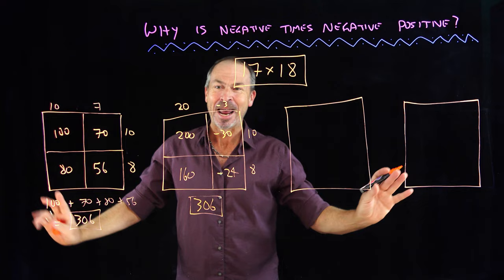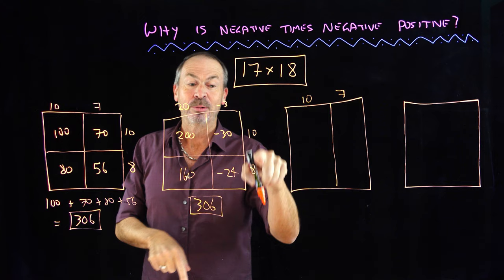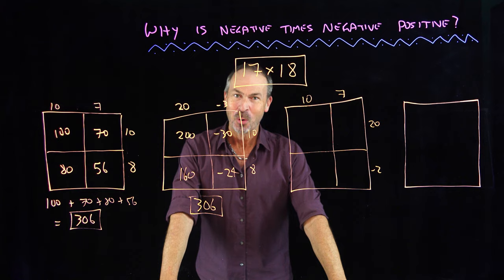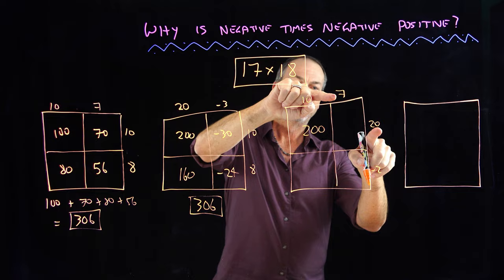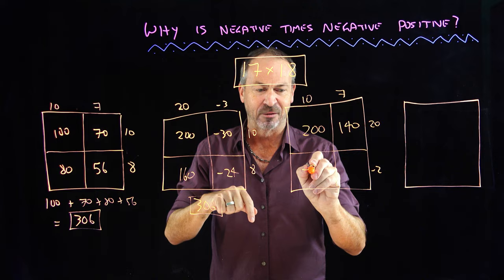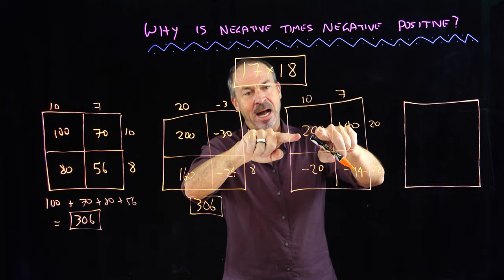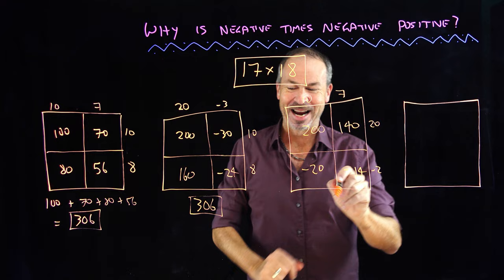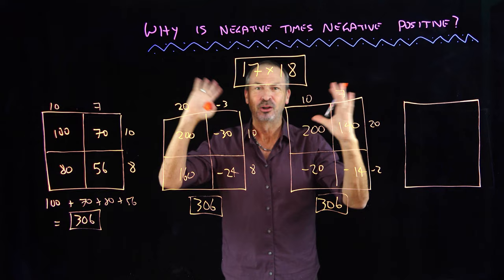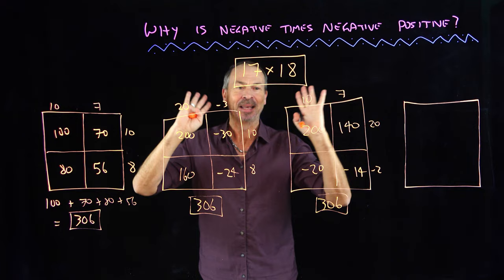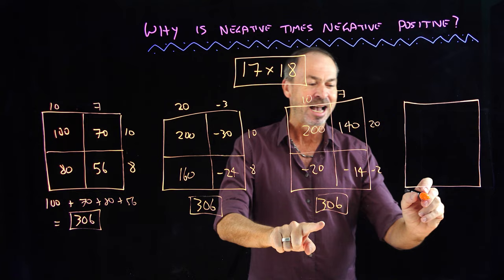Rather than being quirky with the 17, let's keep that the same and this time be quirky with 18 — thinking of it as 20 and negative 2. The pieces give: 10×20=200, 7×20=140, 10×(−2)=−20, and 7×(−2)=−14. Adding up: 200+140=340, minus 20 gives 320, minus 14 gives 306. Again, these arithmetic pictures are speaking truth.